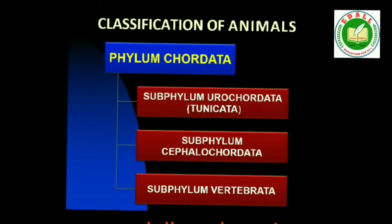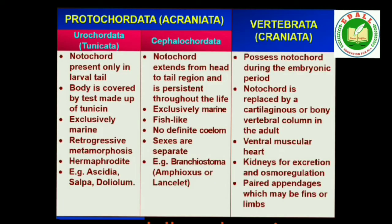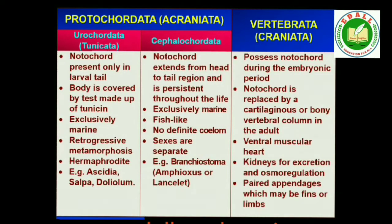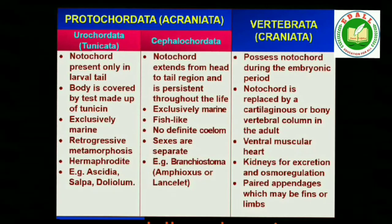Phylum Chordata is divided into three subphyla: Urochordata (Tunicata), Cephalochordata and Vertebrata. Subphyla Urochordata and Cephalochordata are often referred to as protochordates and are exclusively marine. In Urochordata, notochord is present only in the larval tail, while in Cephalochordata it extends from head to tail region and is persistent throughout life. Examples — Urochordata: Ascidia, Salpa, Doliolum. Cephalochordata: Branchiostoma (amphioxus or lancelet). The members of subphylum Vertebrata possess notochord during the embryonic period, and a cartilaginous or bony vertebral column in the adult. Thus all vertebrates are chordates, but all chordates are not vertebrates.